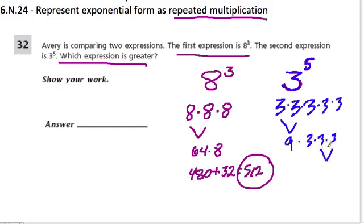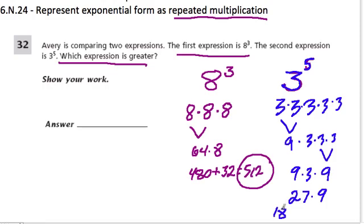3 times 3 over here is 9, so now we have 9 times 3 times 9. What's 9 times 3? It's 27 times 9. 9 times 20 is 180, 9 times 7 is 63 — so altogether it's 243.